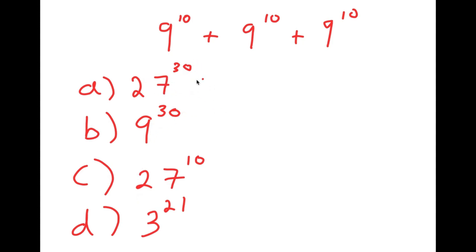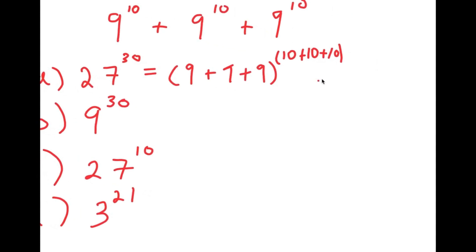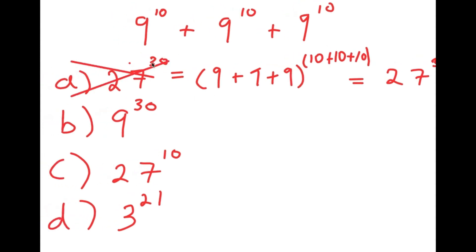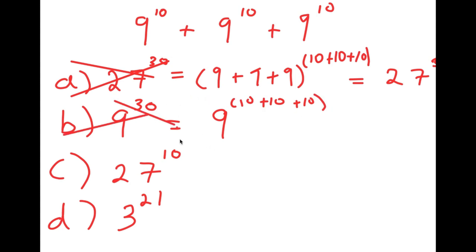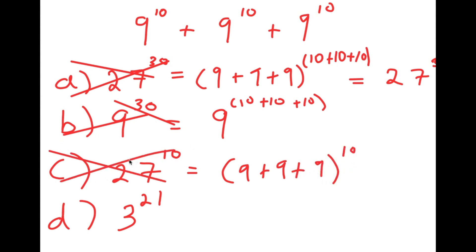First we have A, 27 to the power of 30. This was likely gotten by adding all the bases and adding all the exponents: 9 plus 9 plus 9 to the power of 10 plus 10 plus 10, which equals 27 to the power of 30. This is actually wrong because that's not the proper way to add exponents. For B, 9 to the power of 30 was likely gotten by keeping the base the same and adding the exponents — again wrong. For C, 27 to the power of 10 comes from adding the bases but keeping the exponent the same — also wrong.